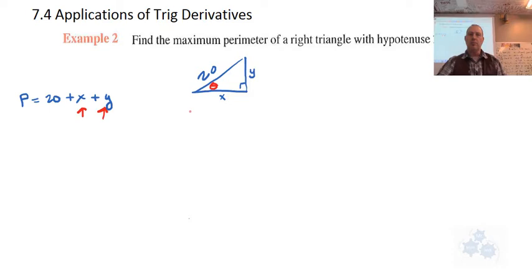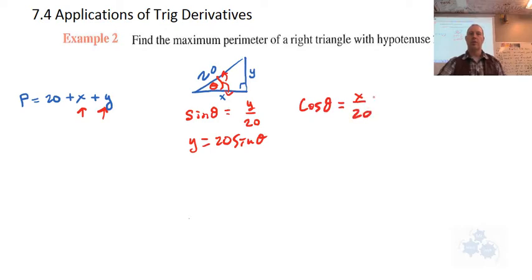SOHCAHTOA, yes. That's going to be the key. If we have an angle, I'm going to put this angle θ. I can actually relate y with angle θ and x with angle θ. The single variable we're going to have is going to be θ. We're going to work in terms of θ instead of x or y. We know that sin θ in a right triangle equals the opposite side over the hypotenuse, so y = 20 sin θ. We also know that cos θ = x/20, or x = 20 cos θ.